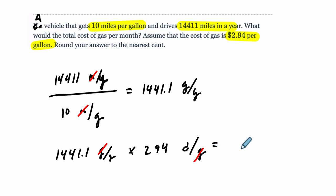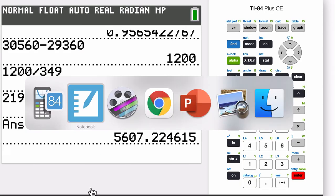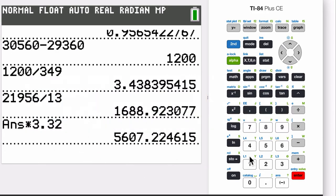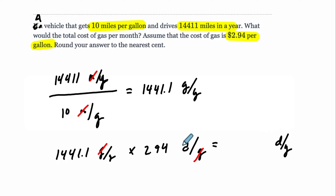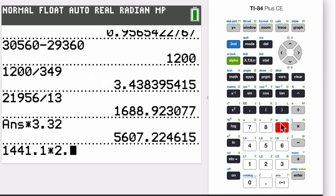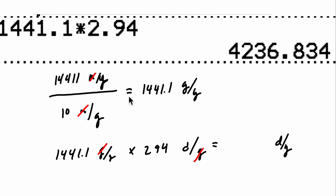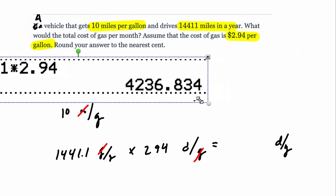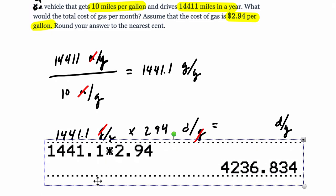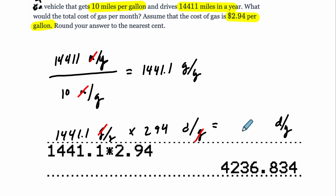And then you're going to have this number, gallons per year, times the cost per gallon. So 2.94 dollars per gallon. And these gallons cancel, and this is dollars per year. So this gets us the cost in dollars per year. So it's, what was that? 1441.1. So 1441.1 times the cost 2.94. Grab this number. Now this is the cost per year. Cost per year. But we don't want that. We'll see what we want in a moment. But right here, let's just say this is the cost in dollars per year, 4236.834. Notice I'm not rounding anything yet. Not yet.